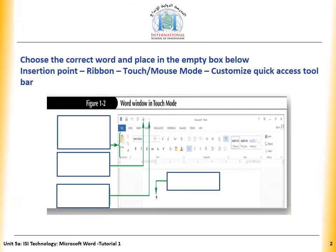Okay, choose the correct word and place it in the empty box below. I have: insertion point, ribbon, touch mouse mode, customize quick access toolbar.